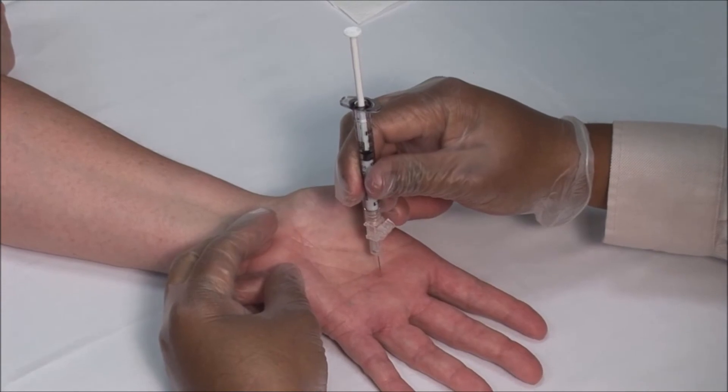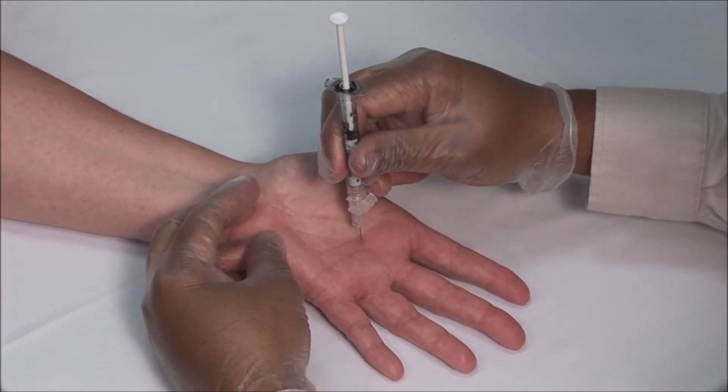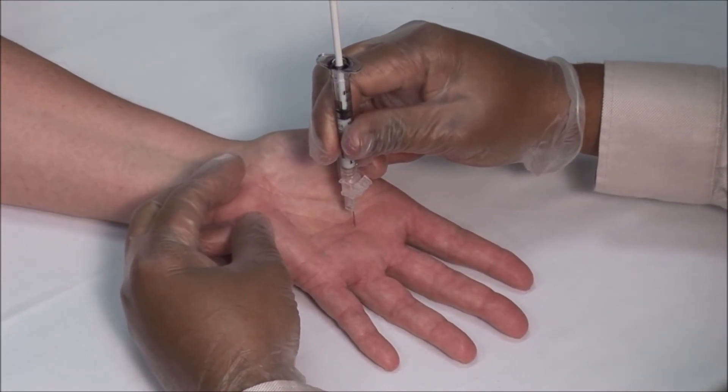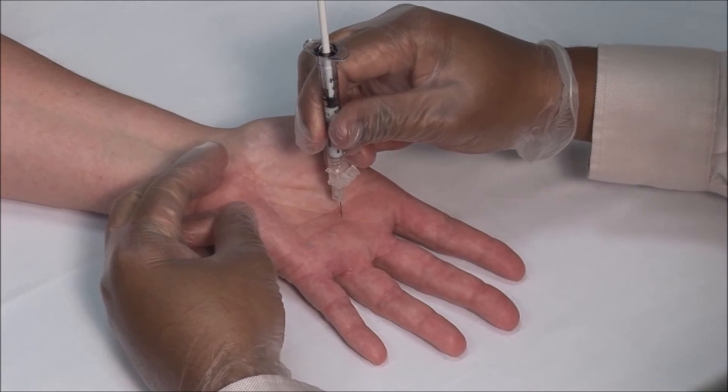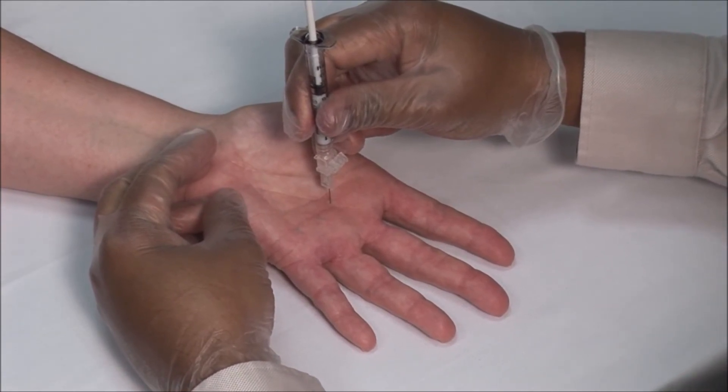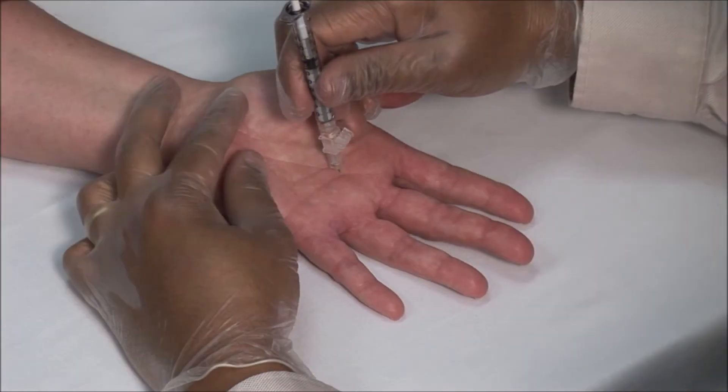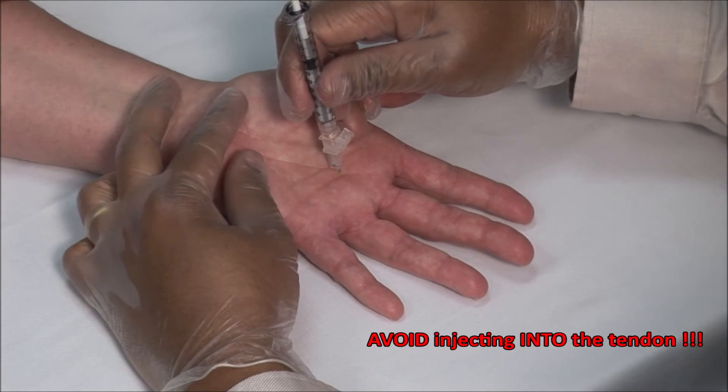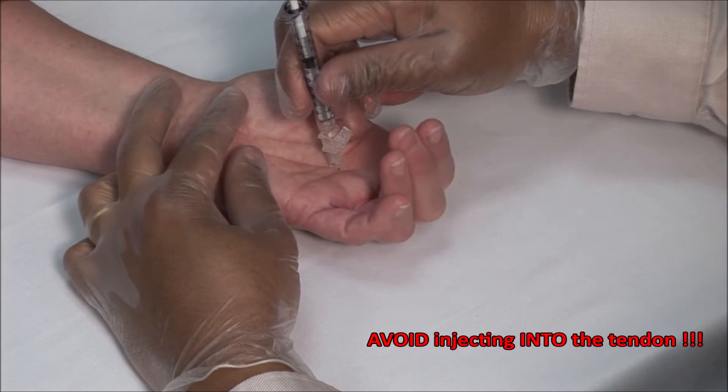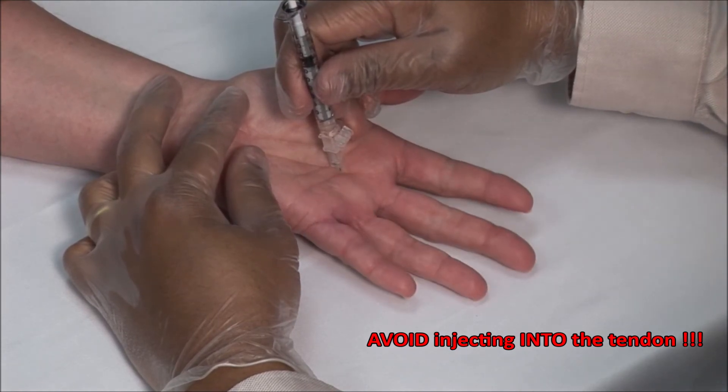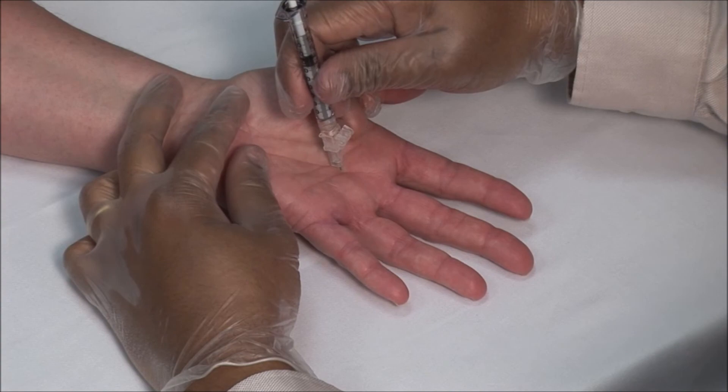Advance the needle vertically down towards the tendon sheath. It should go in about one and a half centimeters. Remember that the injection must not be done within the tendon. You can ask the patient to flex and extend the finger. If the syringe moves, then the needle is within the tendon and it should be withdrawn a little and rechecked.